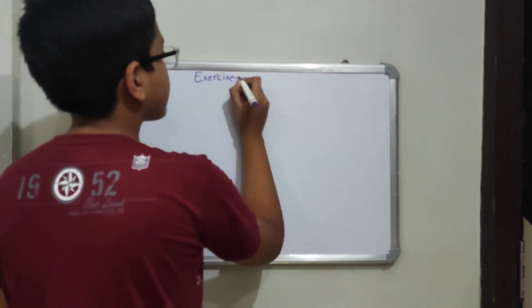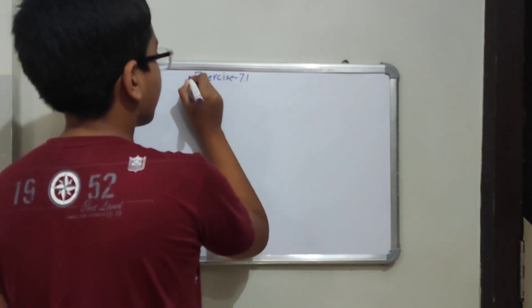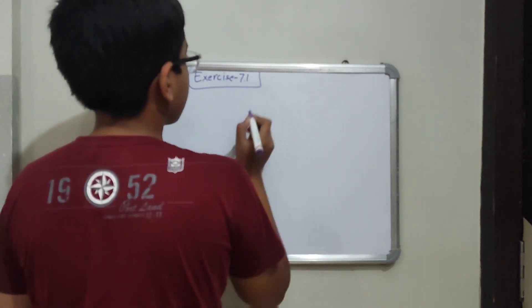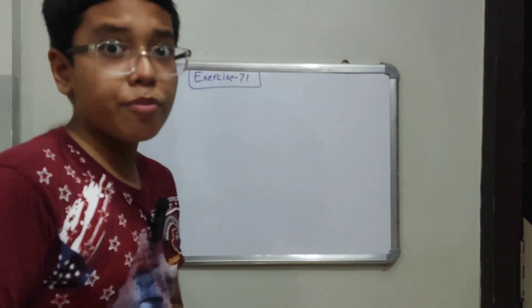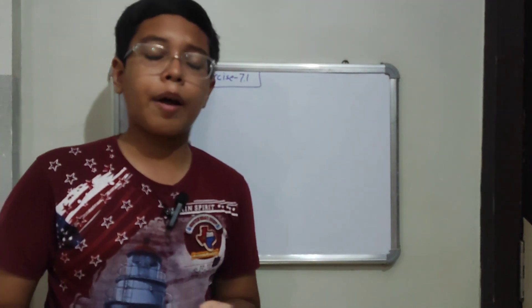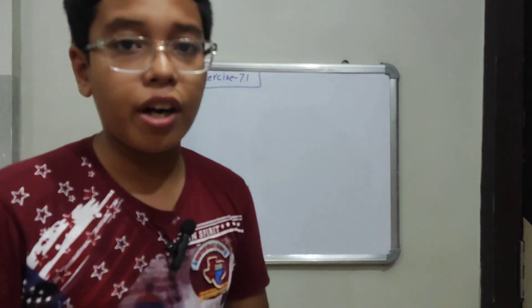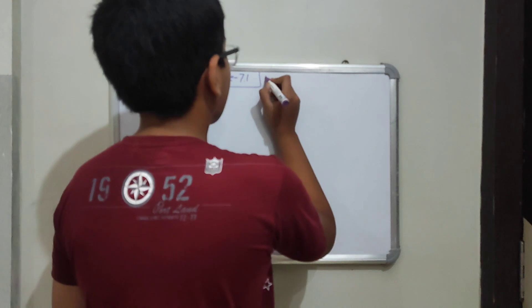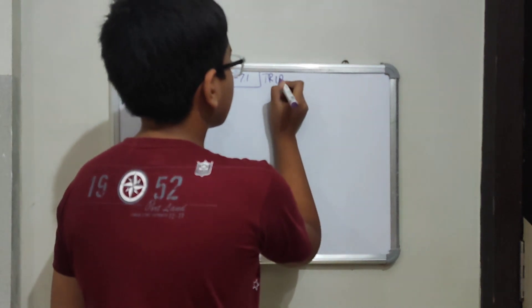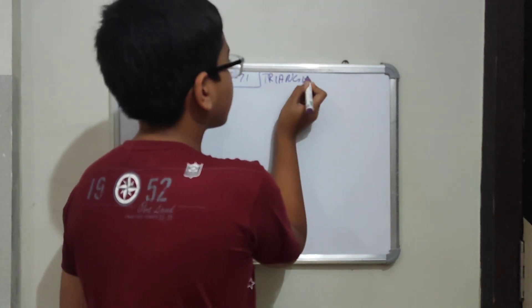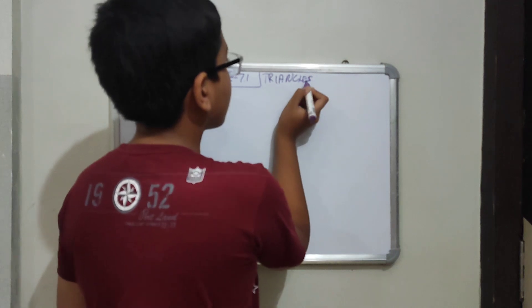Exercise 7.1. I told you in the last video. If you haven't seen that video, you will be given the link in the description. You will go check it out. This chapter is called Triangles.